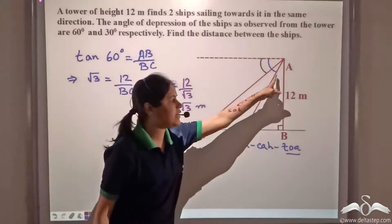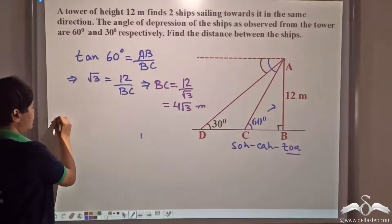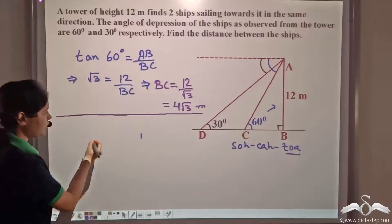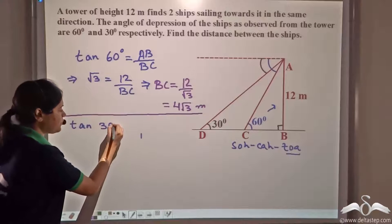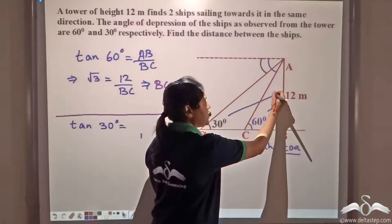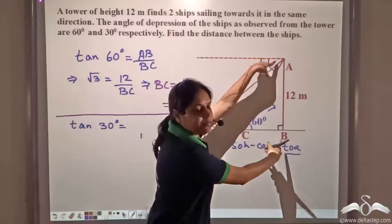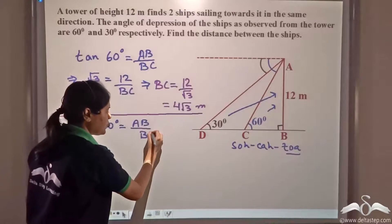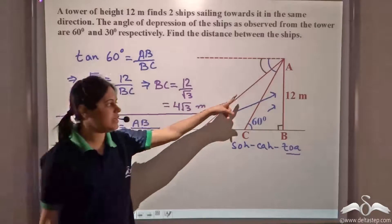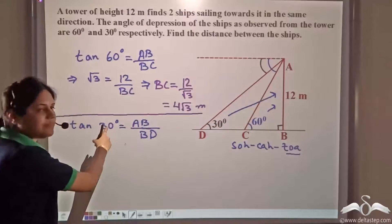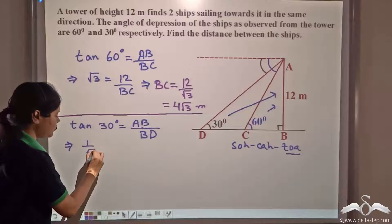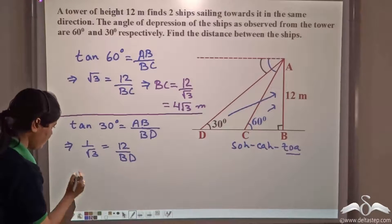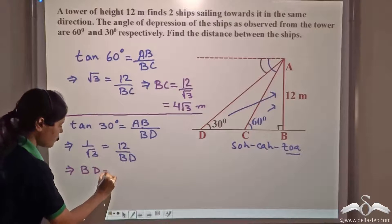Now consider triangle ABD. In triangle ABD, tan thirty degrees equals opposite by adjacent, that is AB by BD. We know tan thirty degrees is one by root three and AB is twelve meters, so one by root three equals twelve by BD. Cross multiplying, BD equals twelve root three meters.